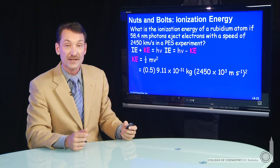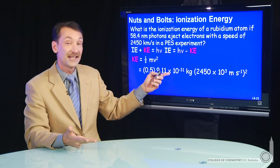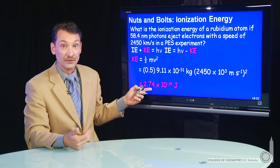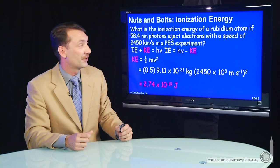And I write the velocity in meters per second to always operate in meters, kilograms, and seconds. That will give me joules when I calculate an energy. In this case, 2.74 times 10 to the minus 18th joules of kinetic energy for those photoelectrons.